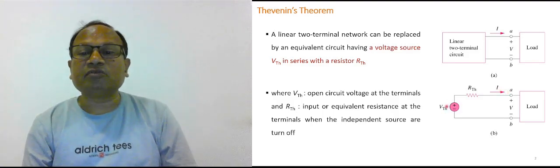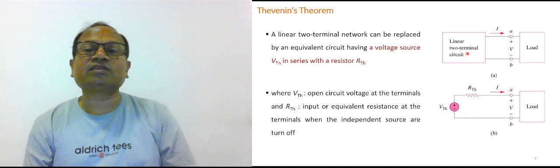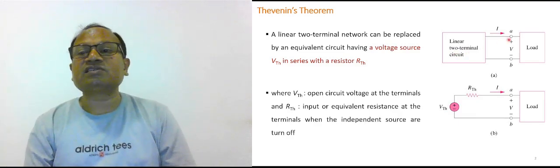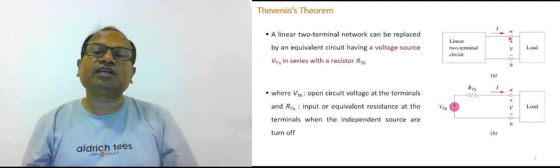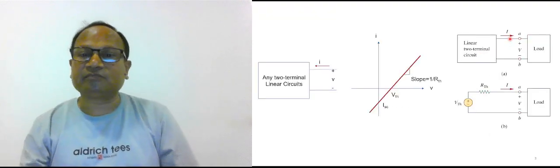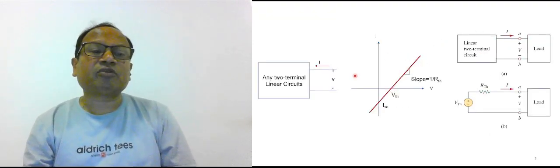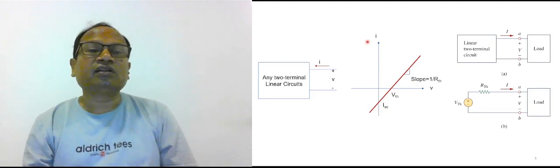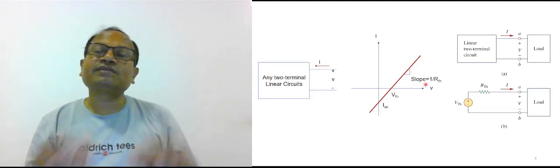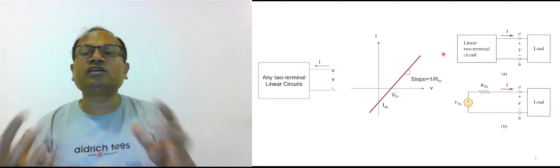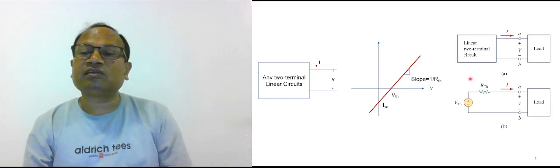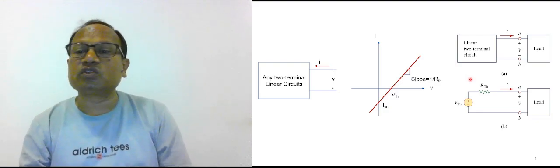Sometimes we also say that Thevenin resistance is the internal resistance of the given network — the resistance seen from the terminals, representing how much resistance is offered by the network when viewed from those terminals. This is a property of a linear network where the relationship between current and voltage is linear. The condition is a linear two-terminal network, which can be converted into a single voltage source in series with a resistance called Thevenin resistance.